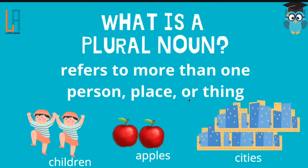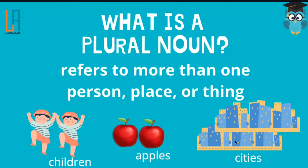We also have what we call a plural noun. So what is a plural noun? It refers to more than one person, place, or thing. It could be two or more people, places, or things. For example, instead of child, we have children — two children. Instead of apple, we have two apples. Instead of city, we have two cities. So that's what a plural noun is.